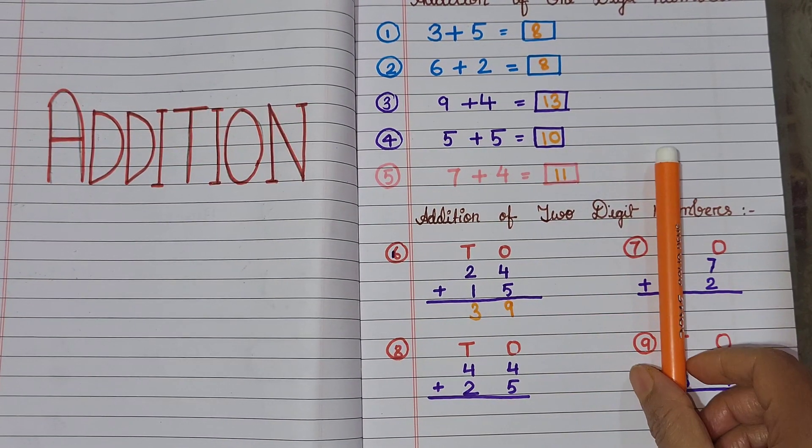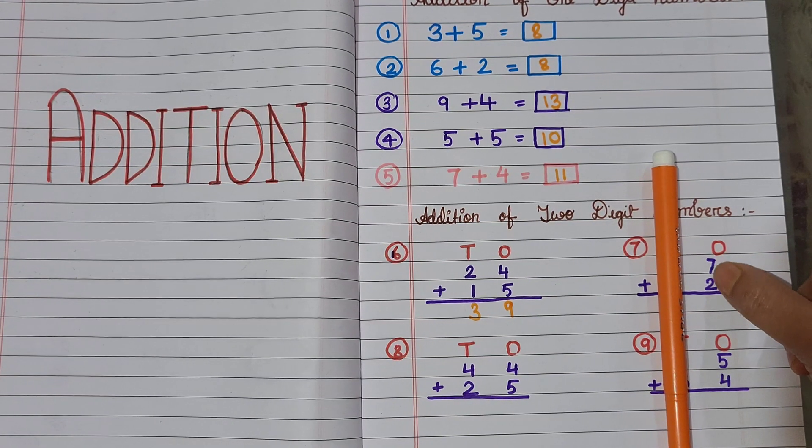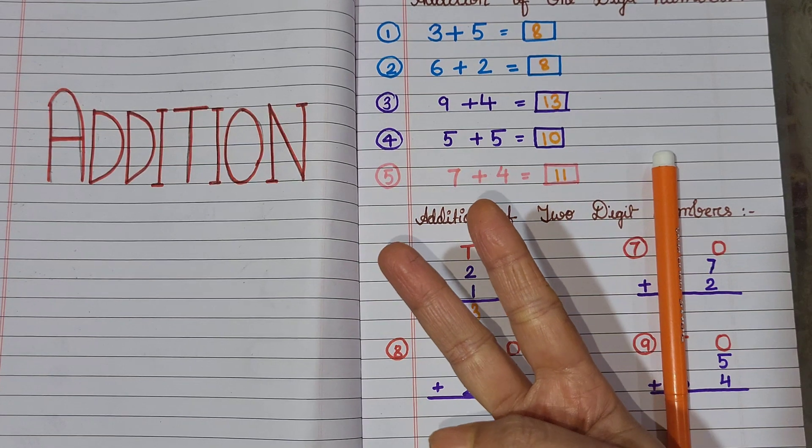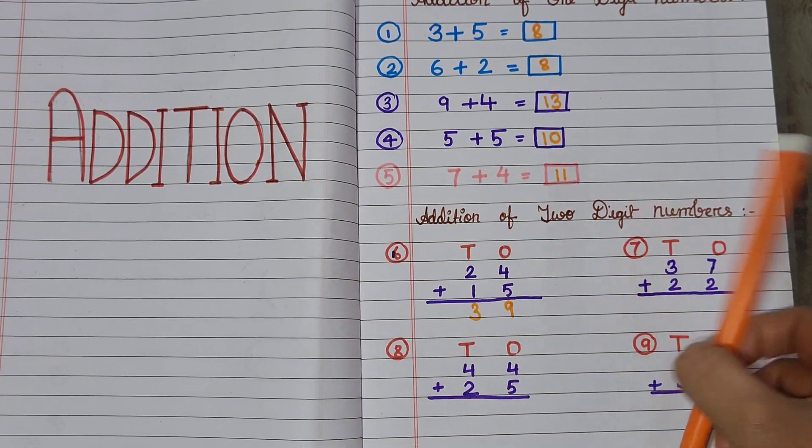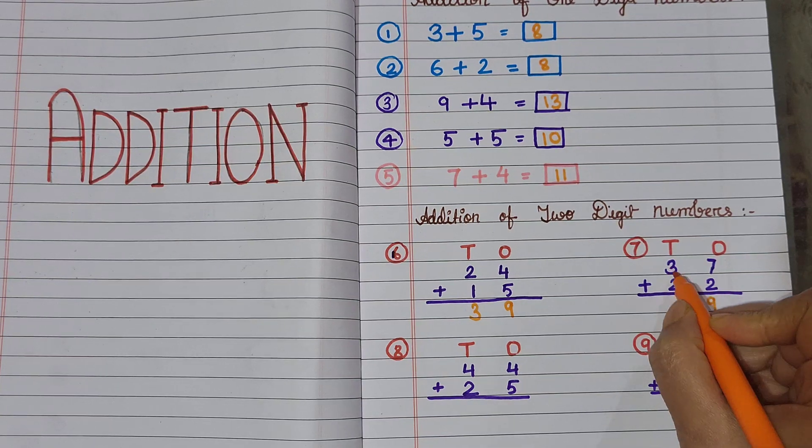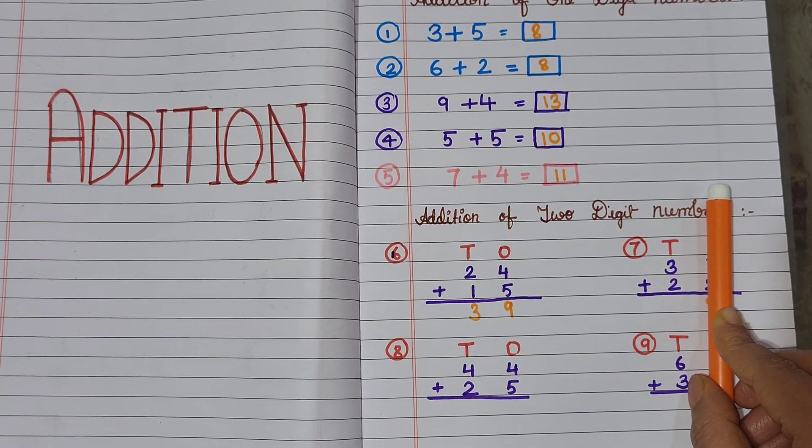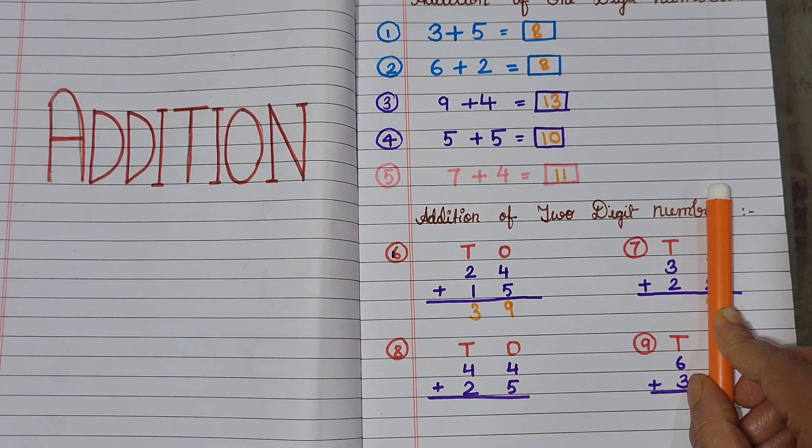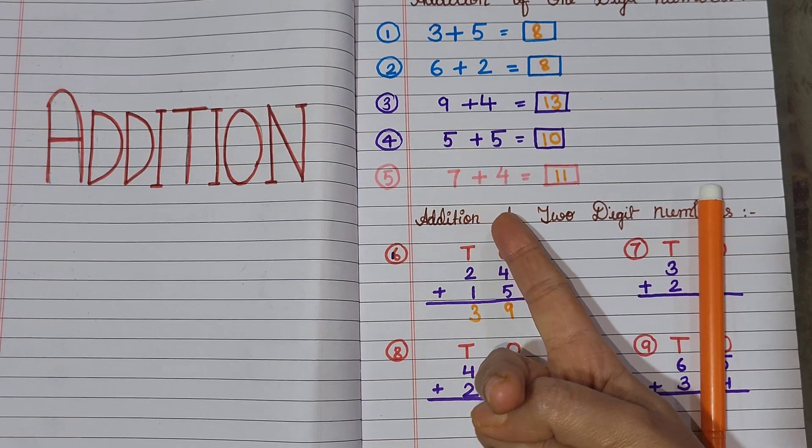Next question, we'll use the same process. First add what's in the ones place, 7 and 2. 7 in my mind, 2 fingers up. 7 ke baad konsa number? 8, 9. Next, 3 and 2 ko jodenge. 3 in my mind, 2 fingers up. 3 ke baad konsa number? 4, 5.